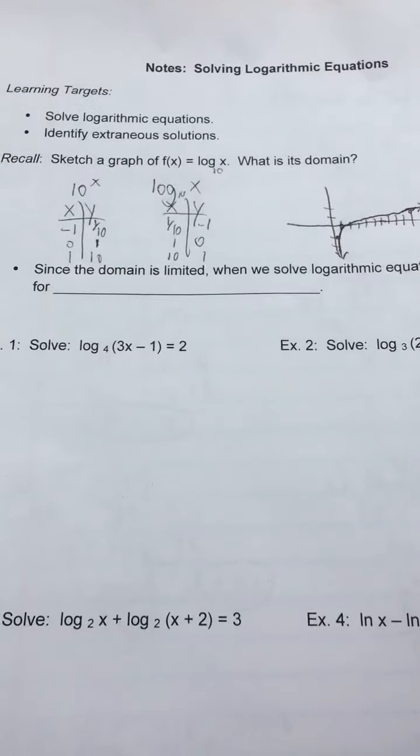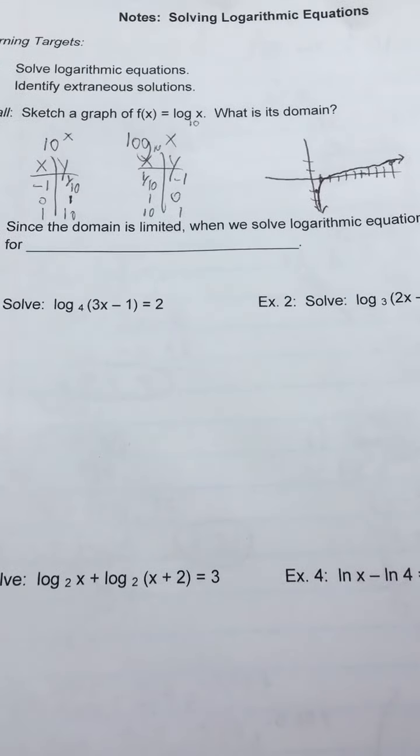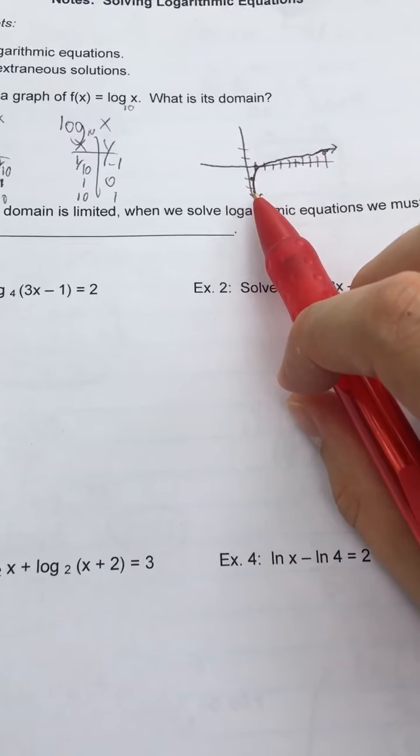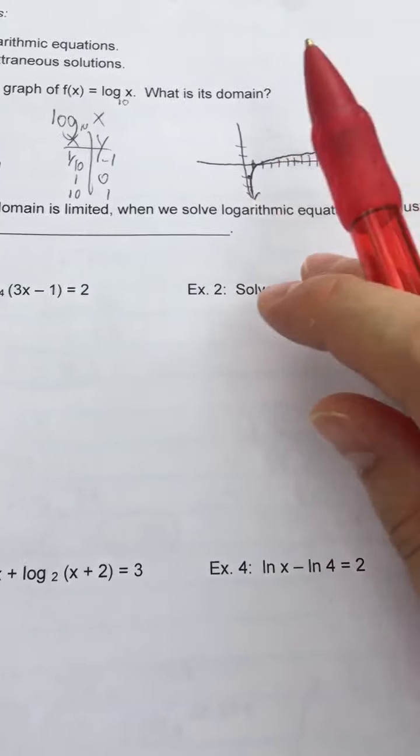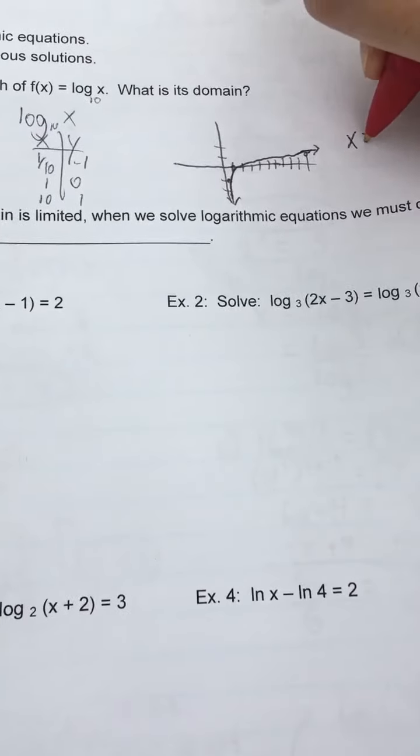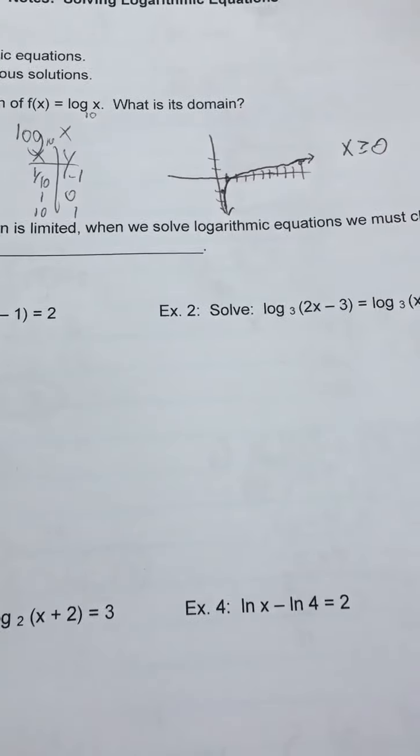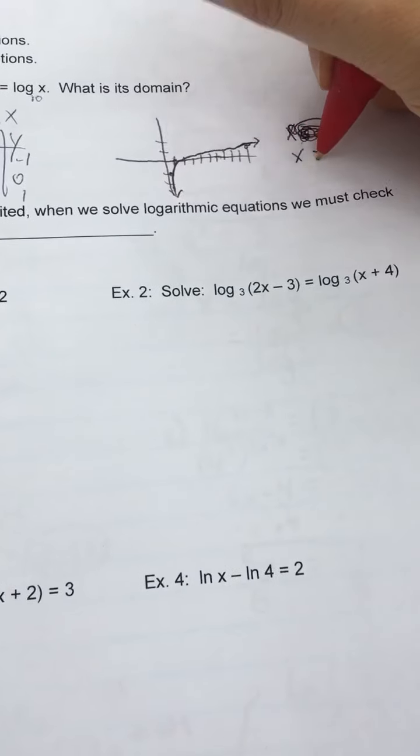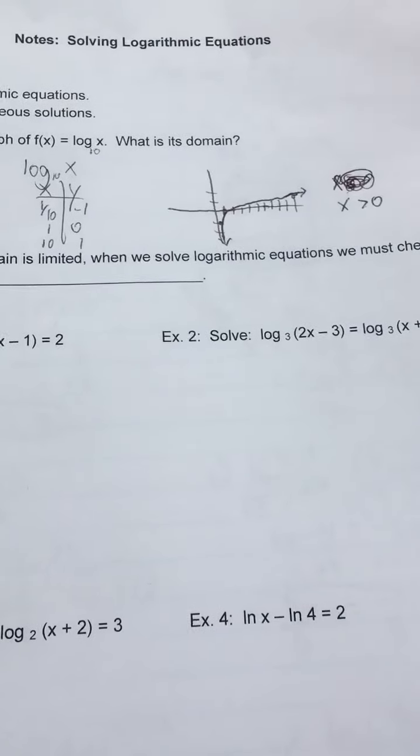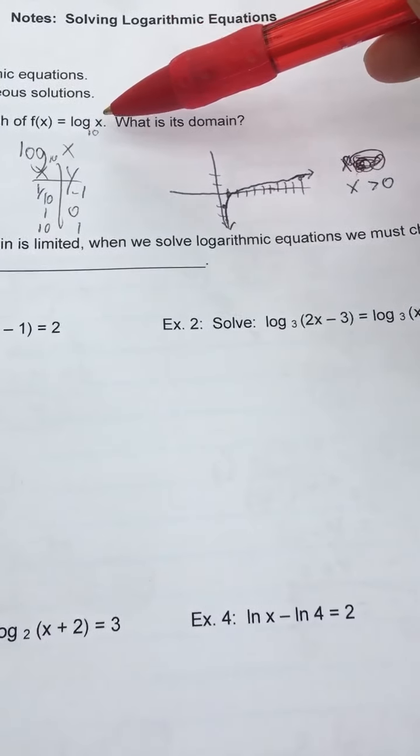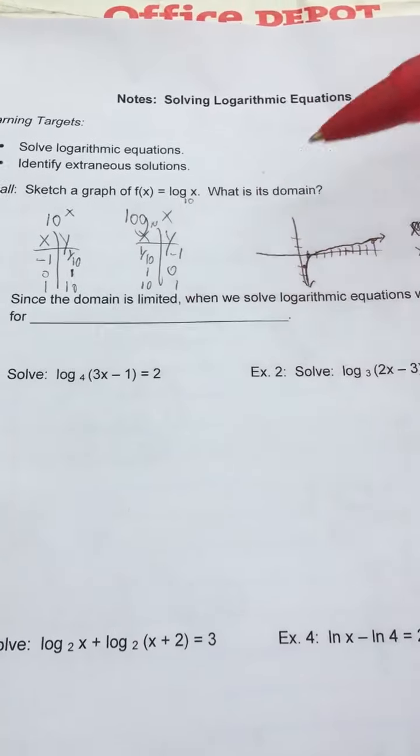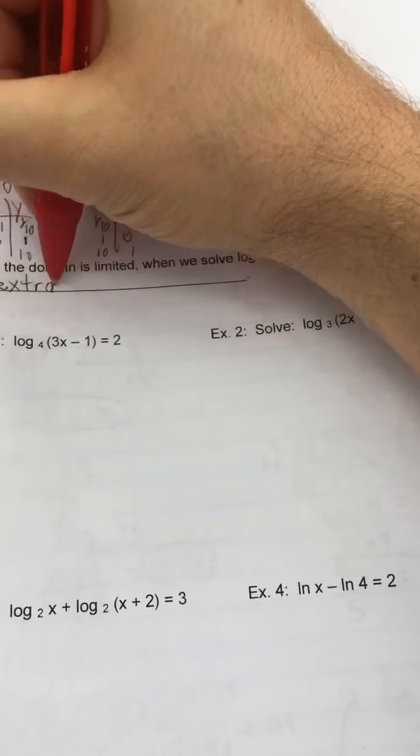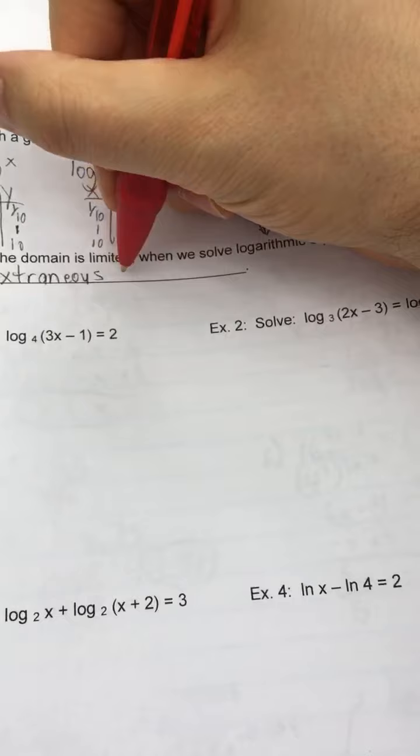Now, you might be thinking, why is this graphing? I thought we were talking about equations. Well, I'll tell you. If you look at this, the domain doesn't go forever both ways. The furthest left it goes, it gets really close but never touches what number? Zero. So the domain is x greater than zero. It's limited. I cannot plug in any number. The domain is x greater than zero. It never actually touches zero. Since I cannot plug in any number for x, the domain is limited. That means when we solve these log equations, we have to check for what's called extraneous solutions.